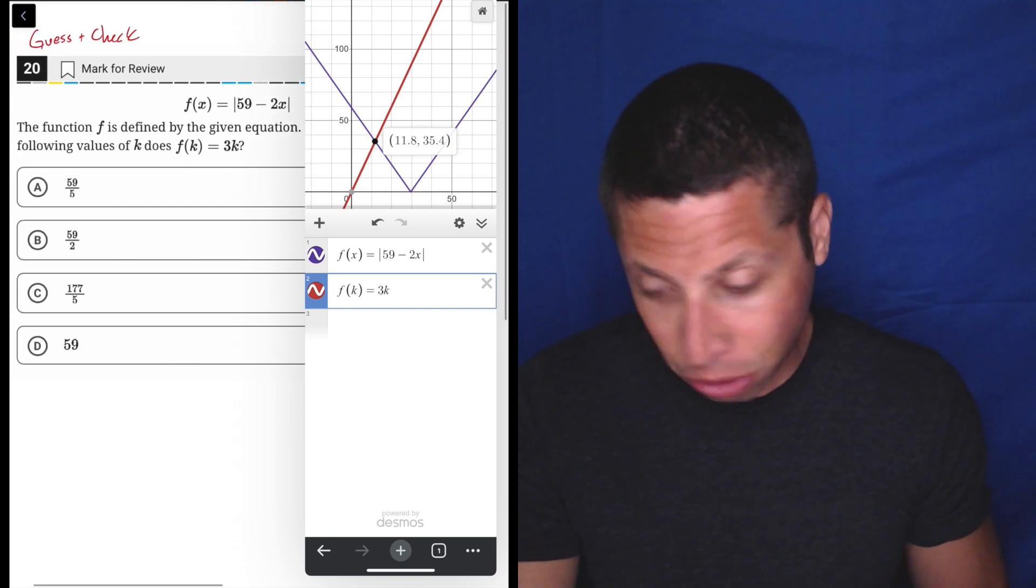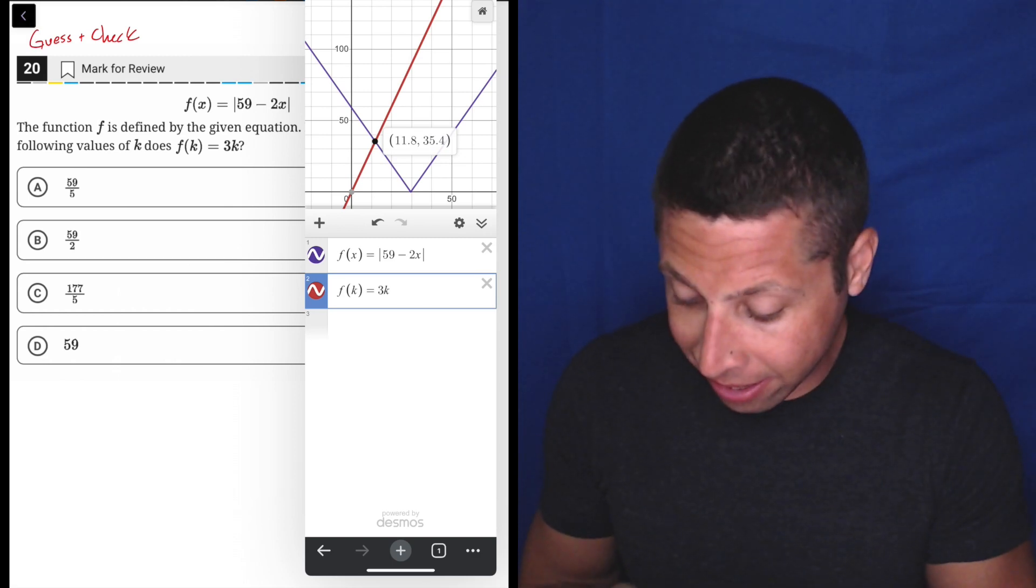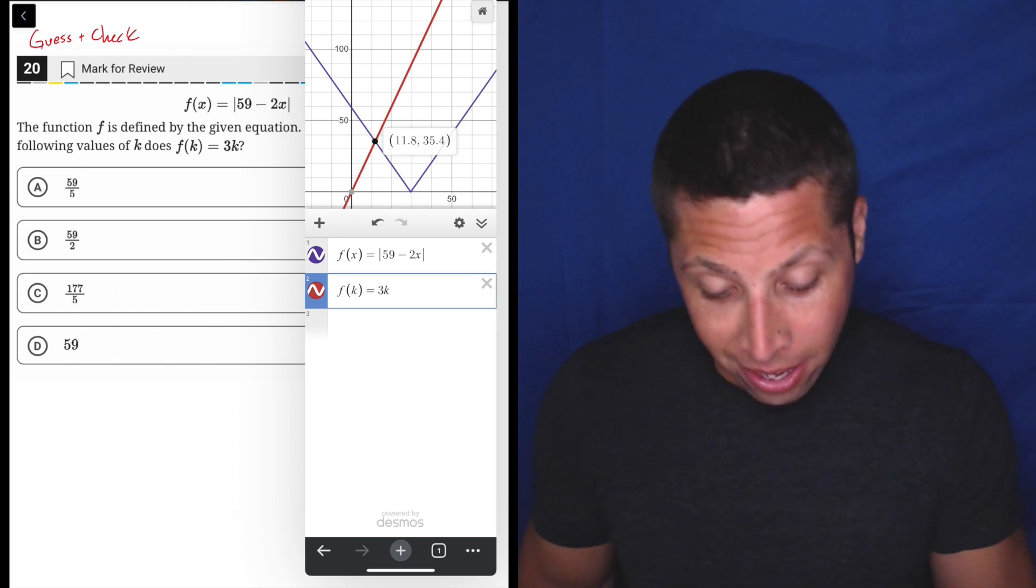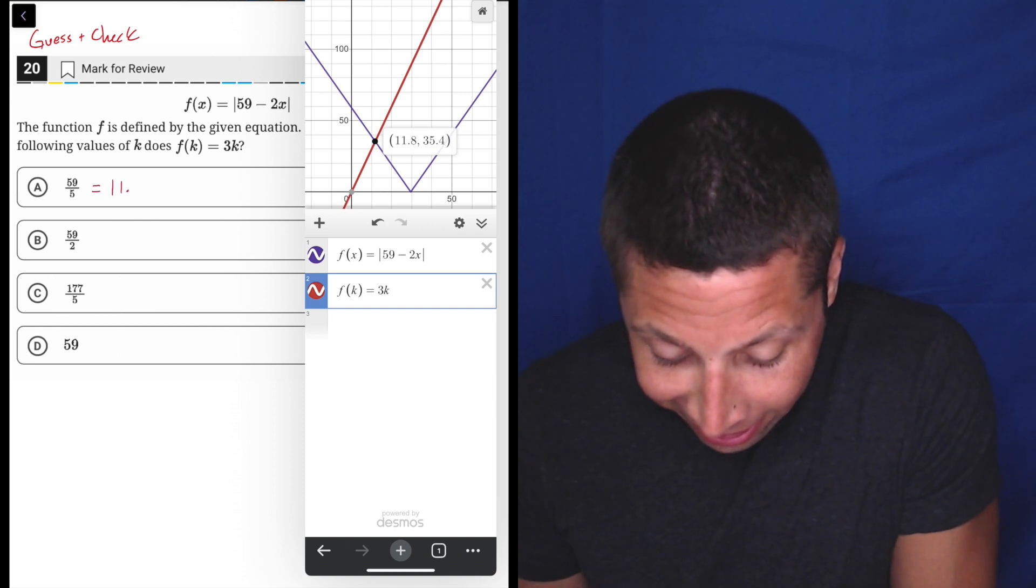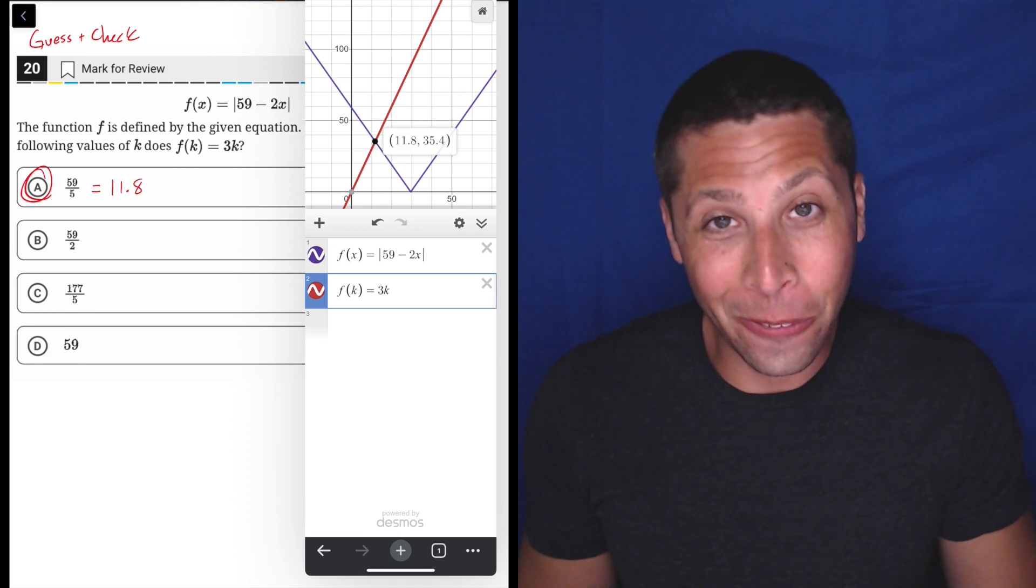Well, if we go to our answer choices, we could just maybe put them in the calculator and see what the decimal equivalent is. And 59 divided by five, well, it's 11.8. And that's the answer. So we could just do that.